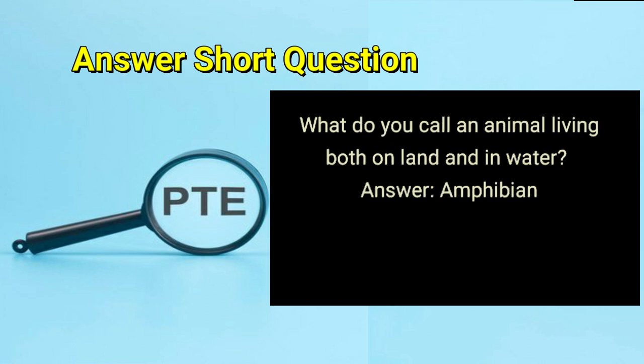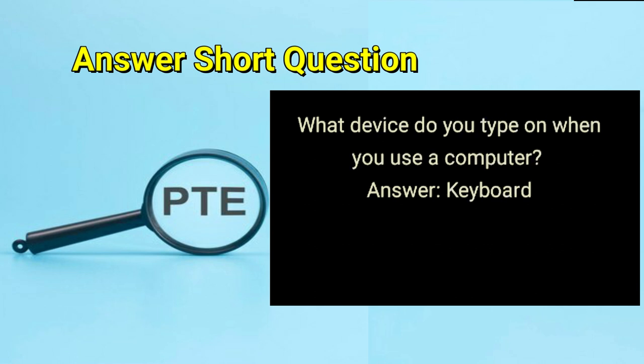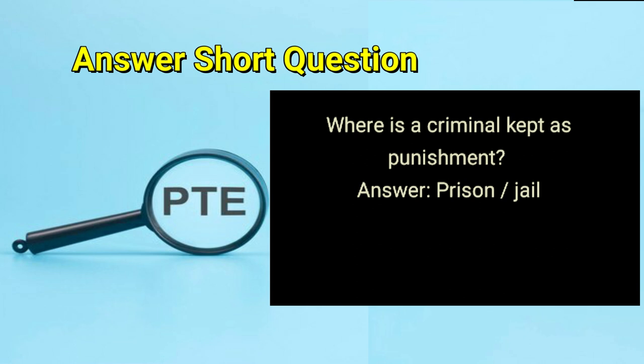What do you call an animal living both on land and in water? Answer: amphibian. What device do you type on when you use a computer? Answer: keyboard. Where is a criminal kept as punishment? Answer: prison or jail.